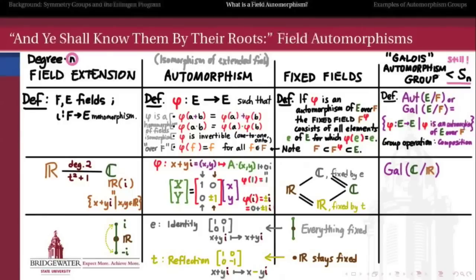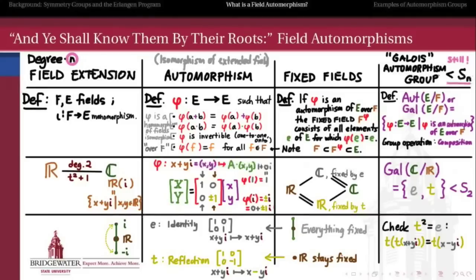The automorphism group — the Galois group — of this field extension is the set of all automorphisms of ℂ over ℝ. We know it must be a subgroup of S₂, the symmetric group on two symbols, and we found exactly two elements: the identity e and the conjugation t. Checking: t composed with t applied to x + yi gives x − yi, then conjugating again gives x + yi — which equals e applied to x + yi. So t² = e, making t an element of order 2. Therefore, the Galois group is isomorphic to ℤ mod 2.